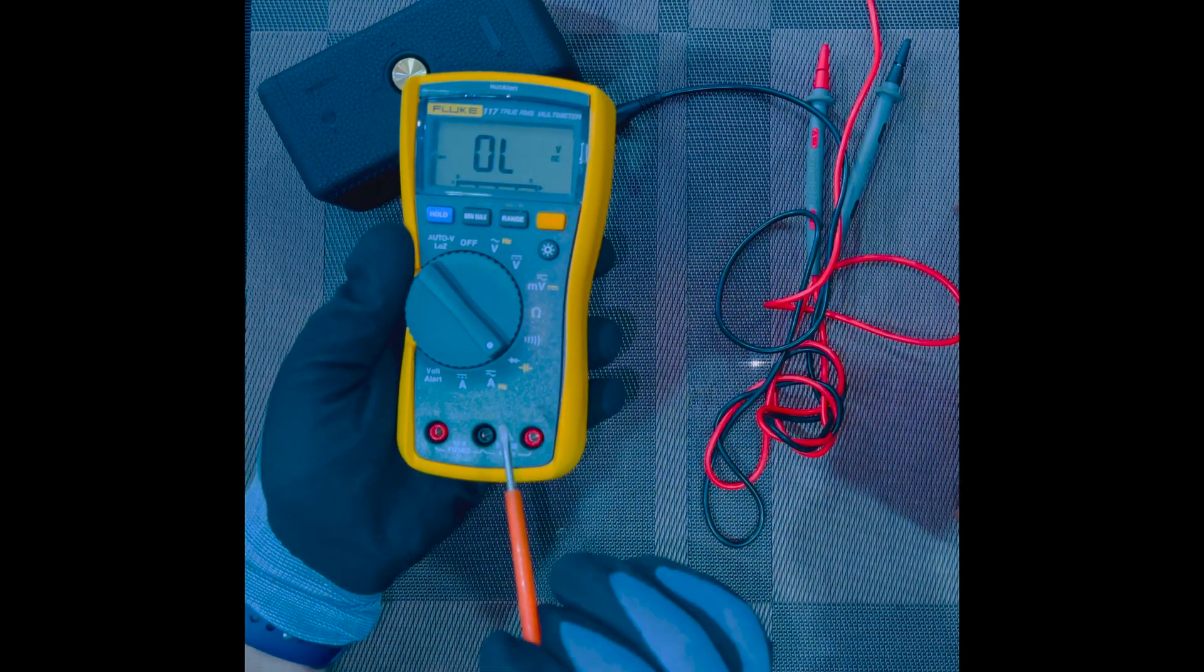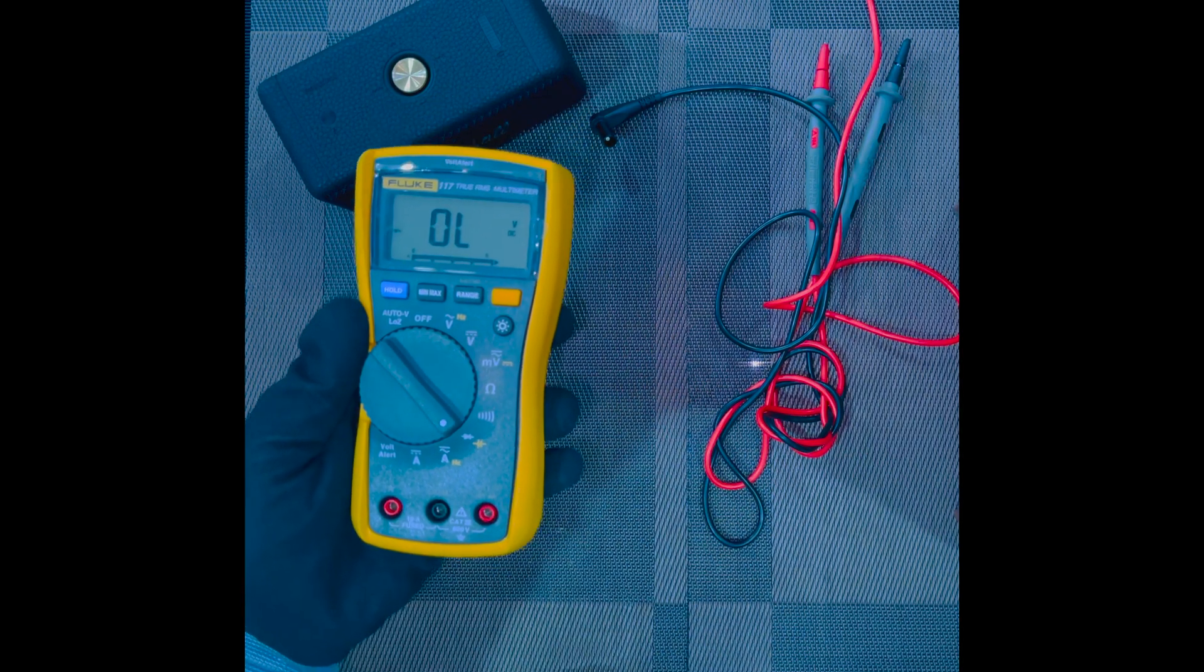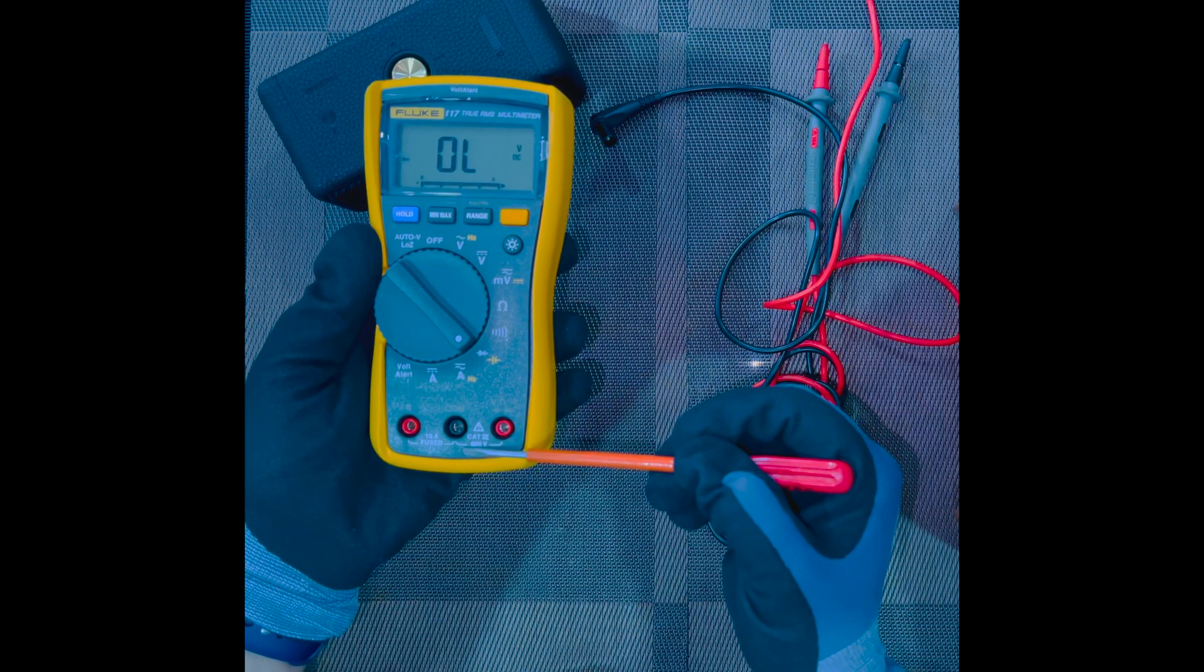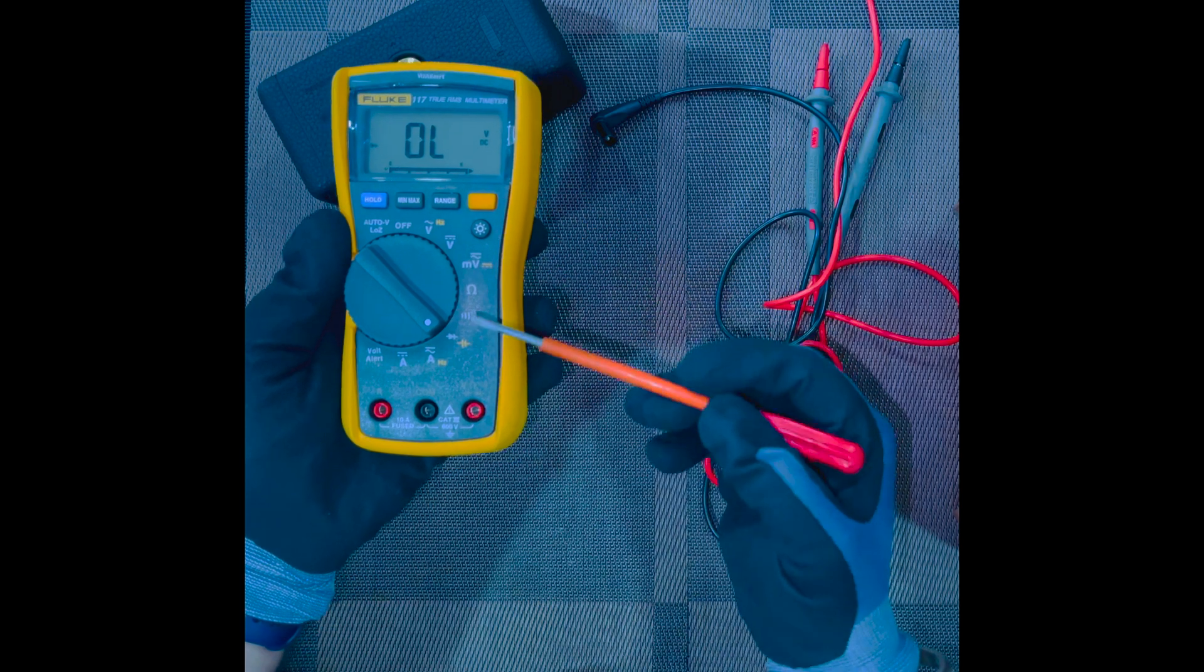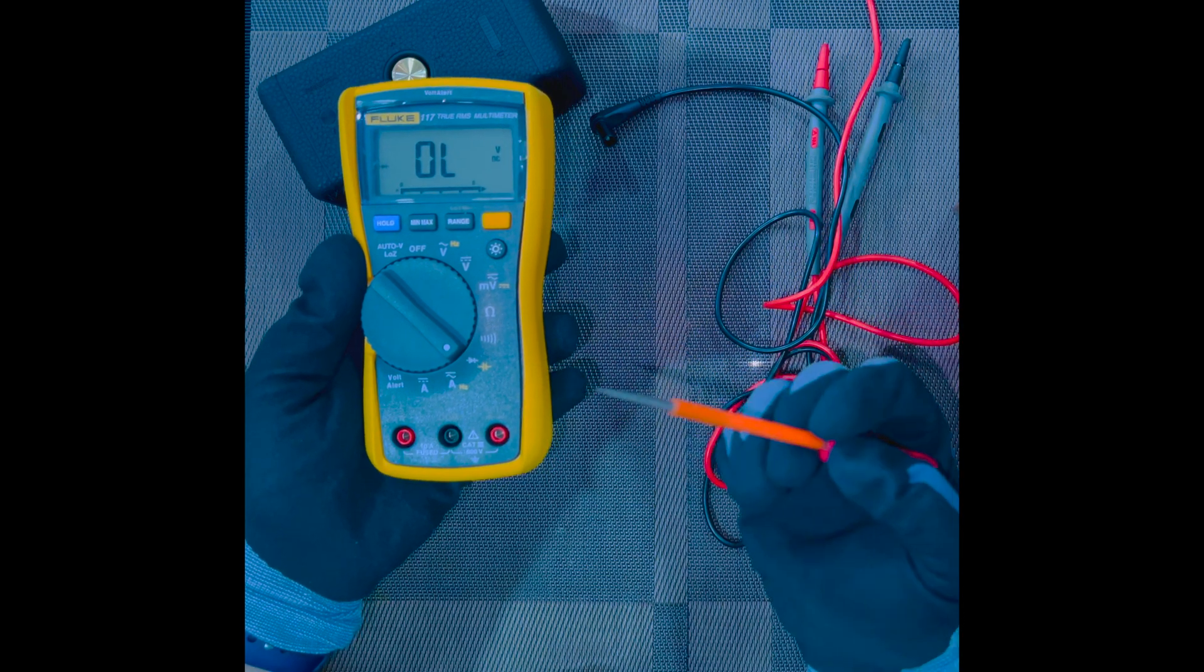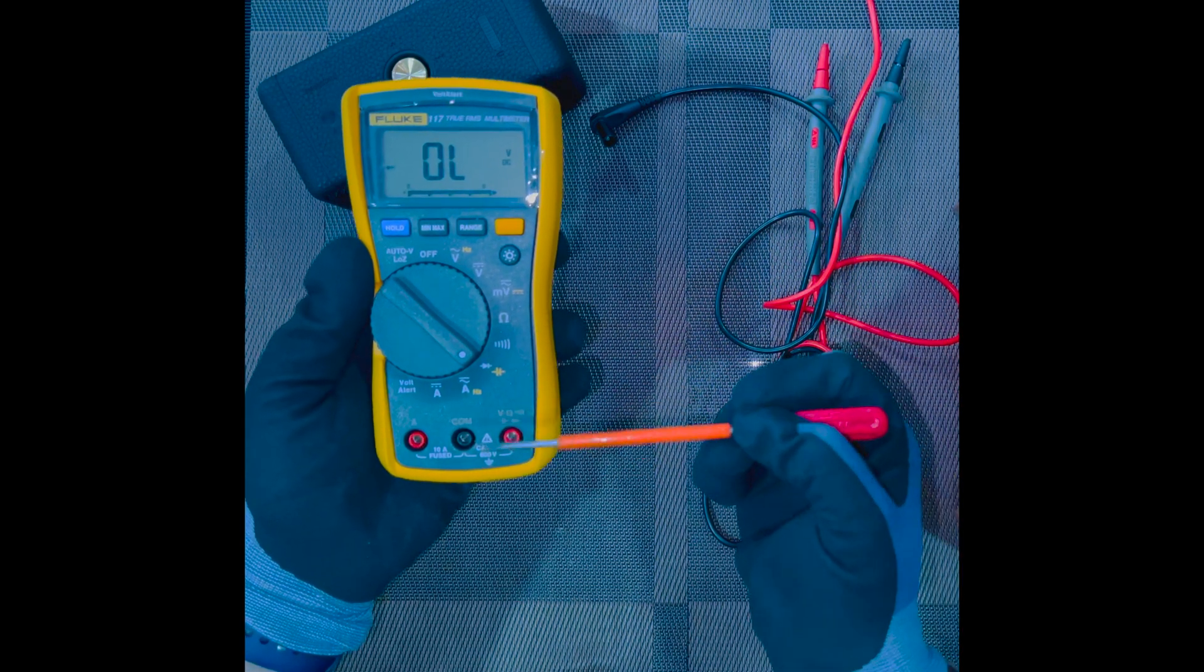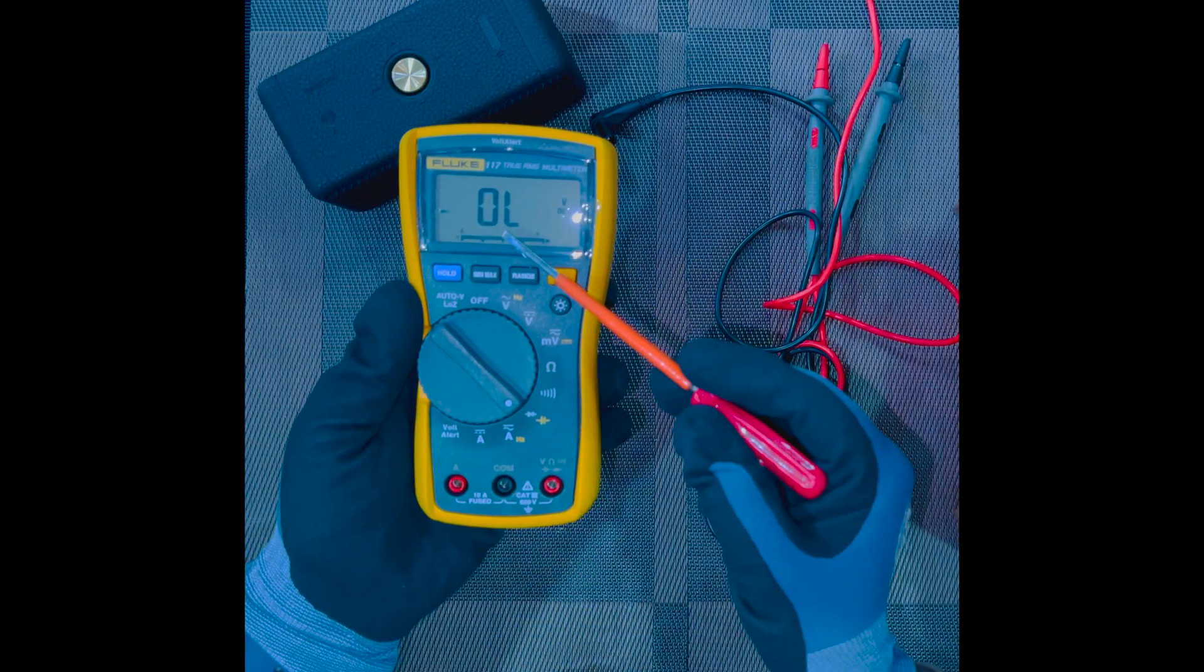When we connect our probes to a diode in this mode, the meter will read a small voltage if the diode is allowing the flow from the red probe to the black probe. It will show open circuit if the diode is not allowing the current to flow.